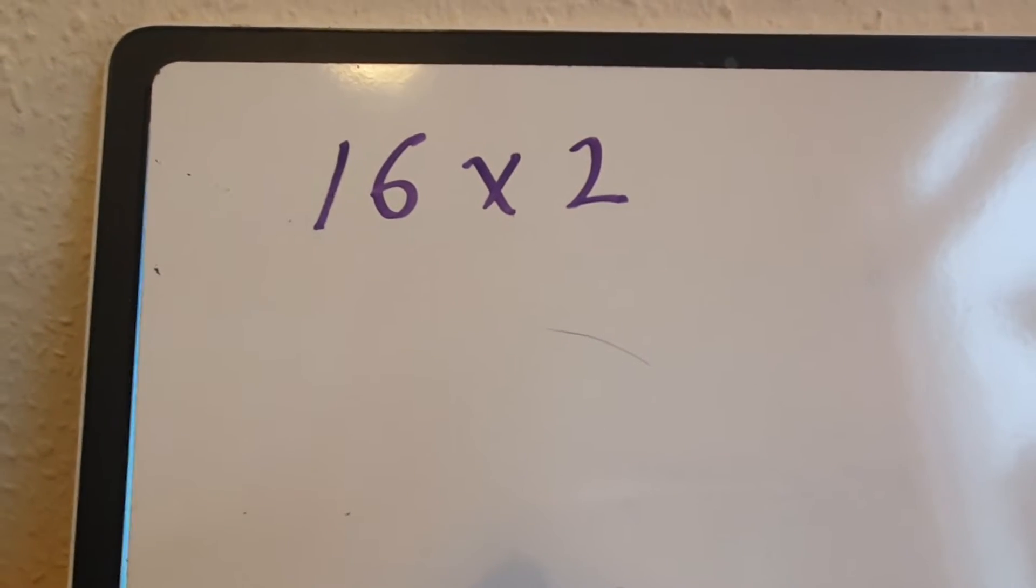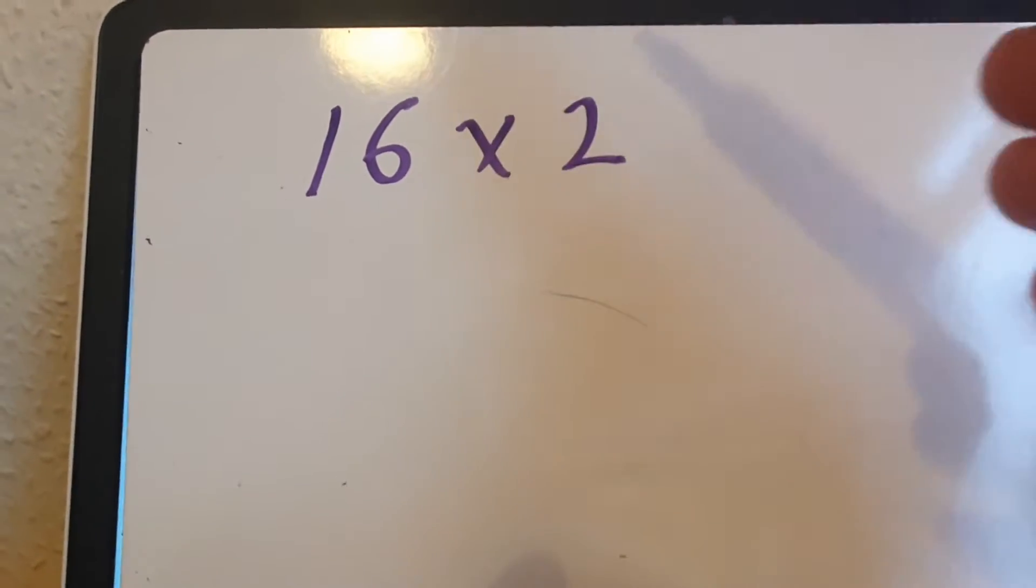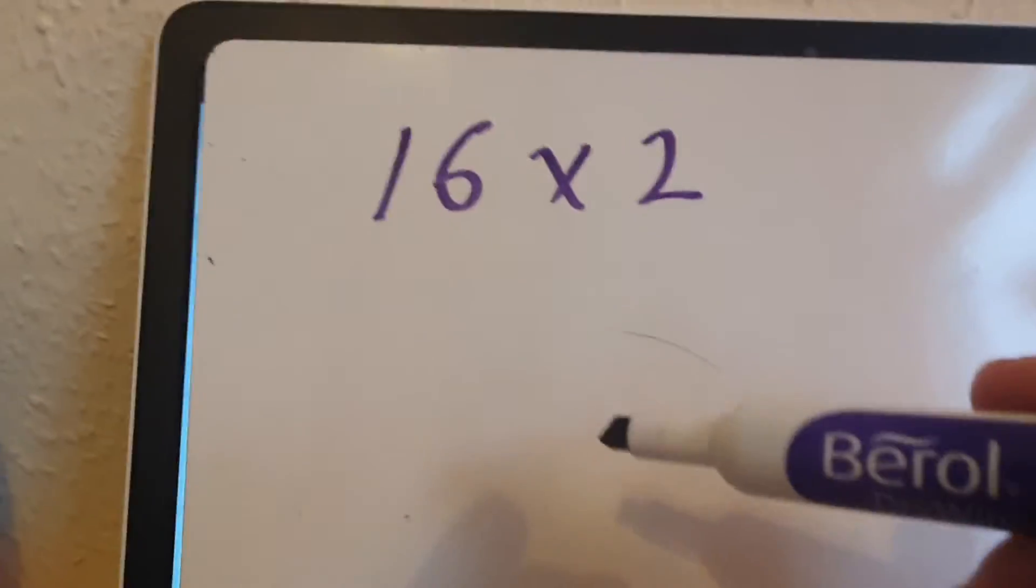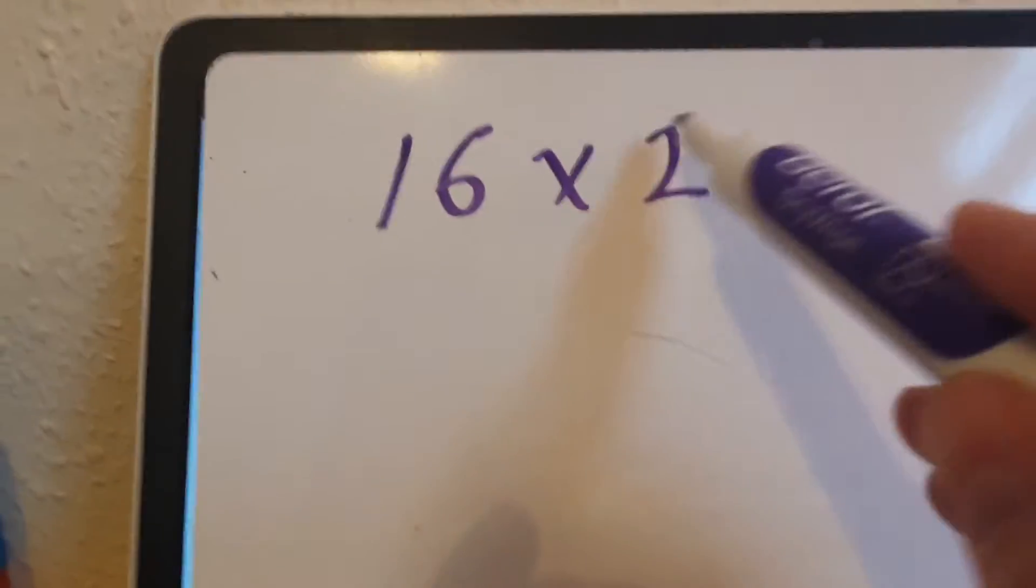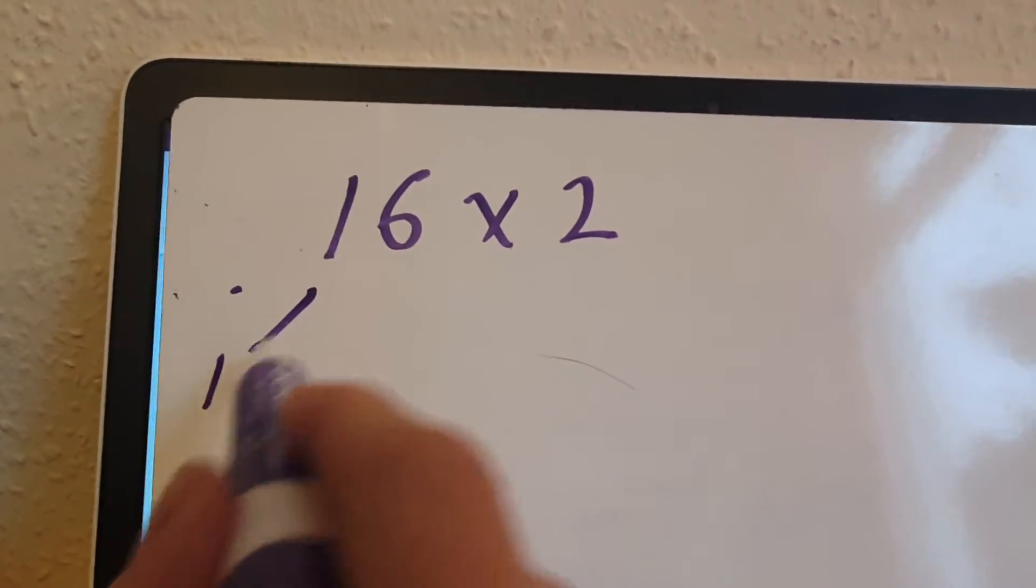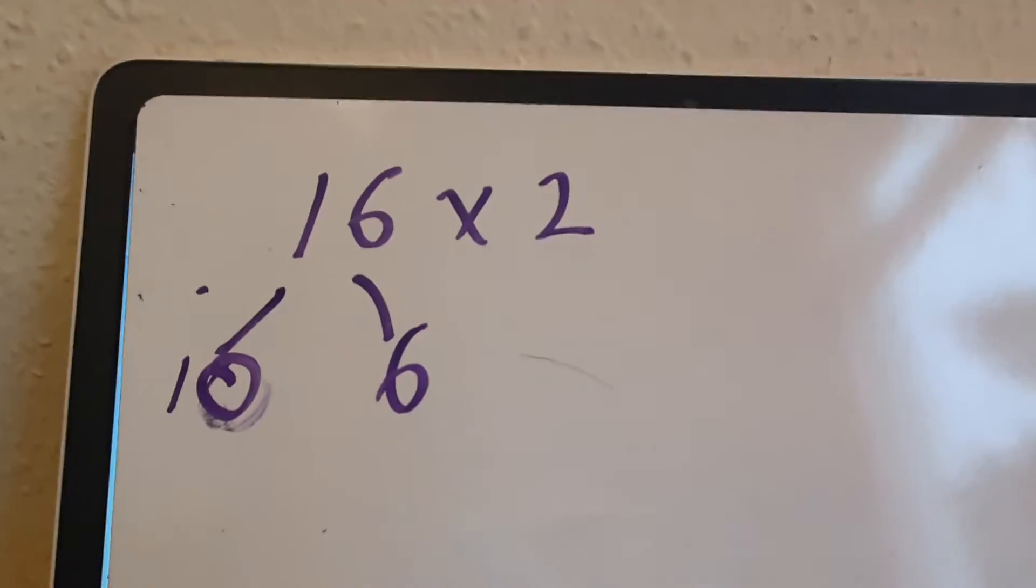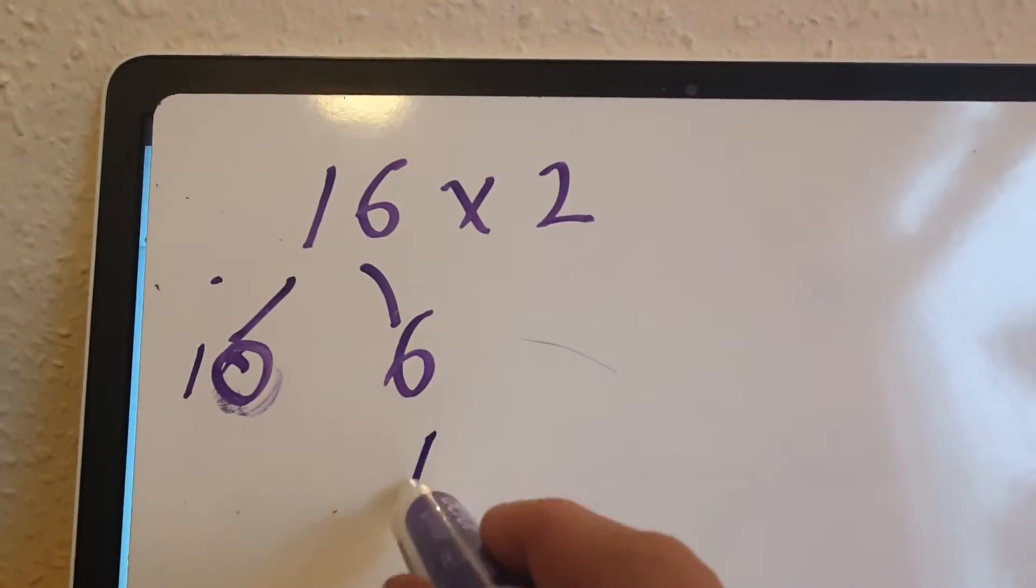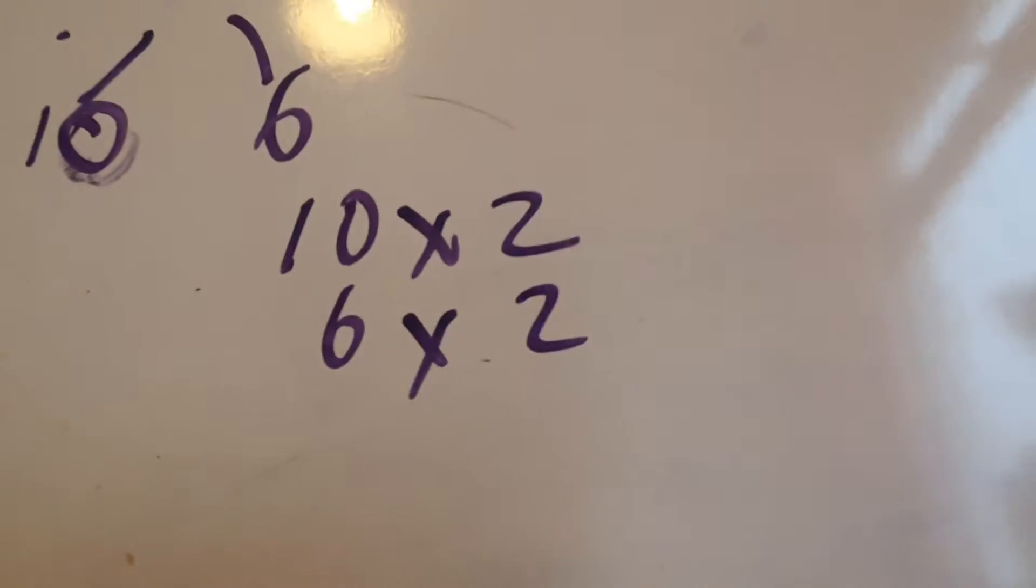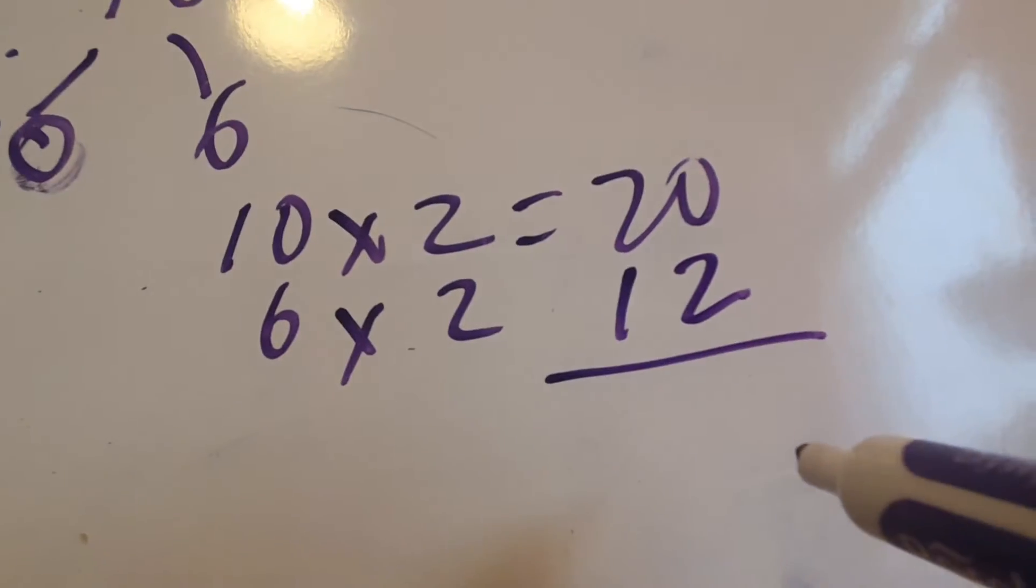I'm going to do 16 times 2, or 16 multiplied by 2. In other words, double 16, or two lots of 16. There are a few different ways we can do this and we're looking at two-digit times one-digit numbers today. So if I partition that, that would be 10 and that would be 6. So I need to do 10 times 2 and 6 times 2. 10 twos are 20 and 6 twos are 12.